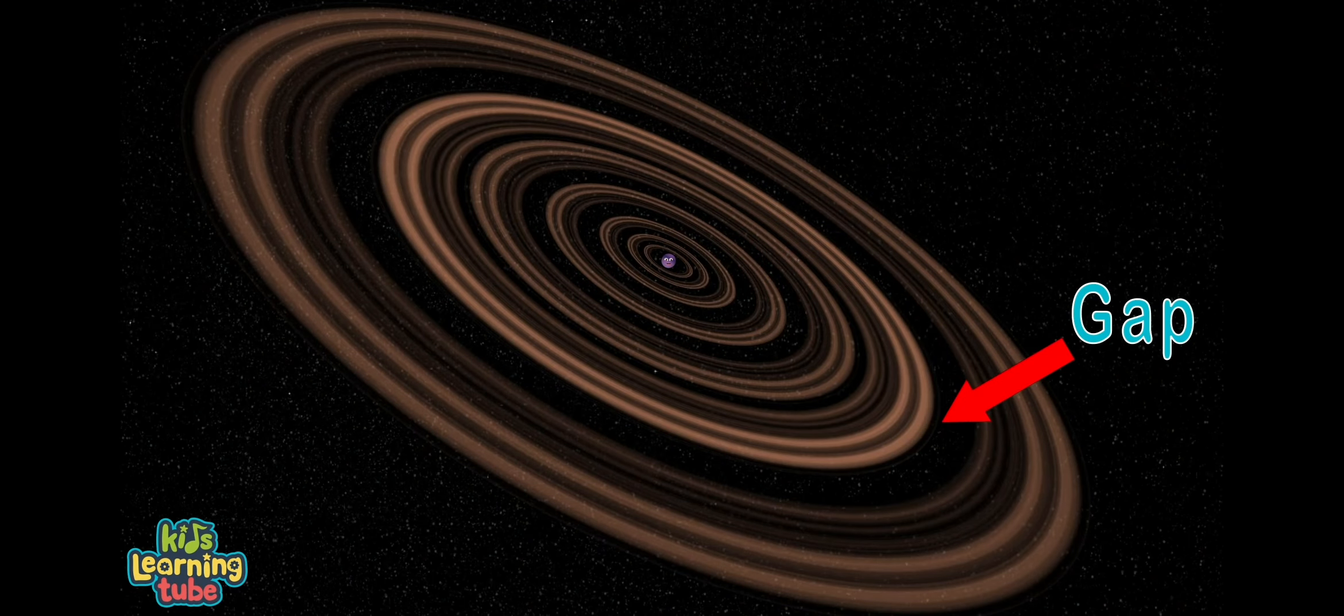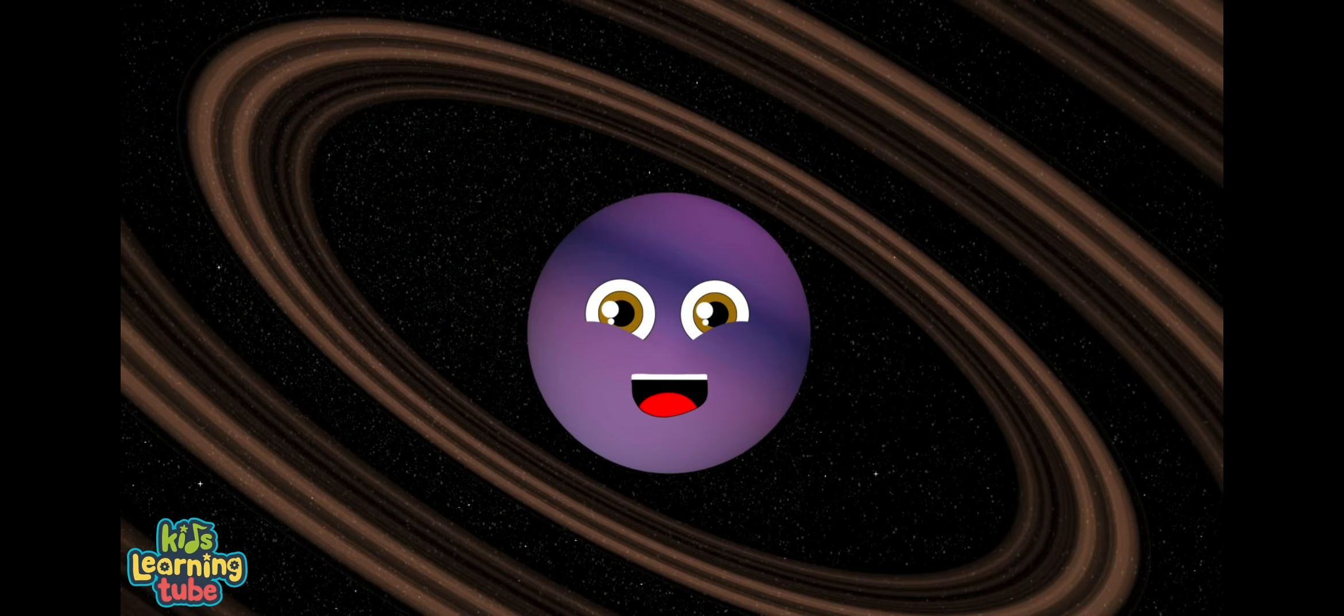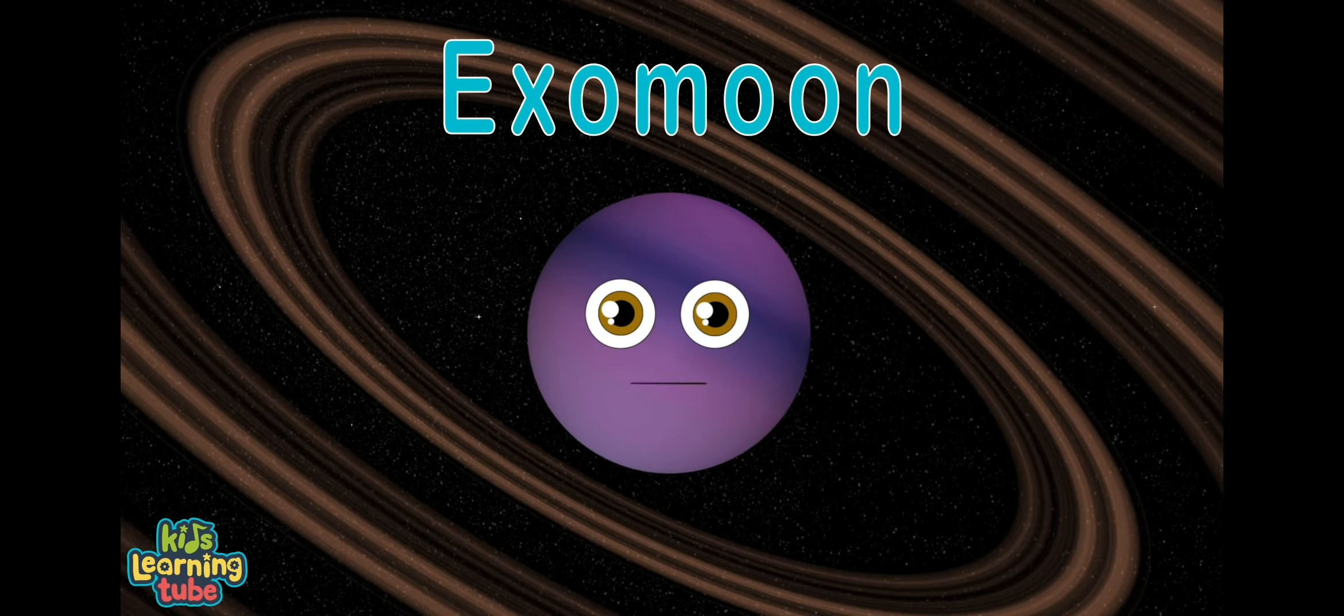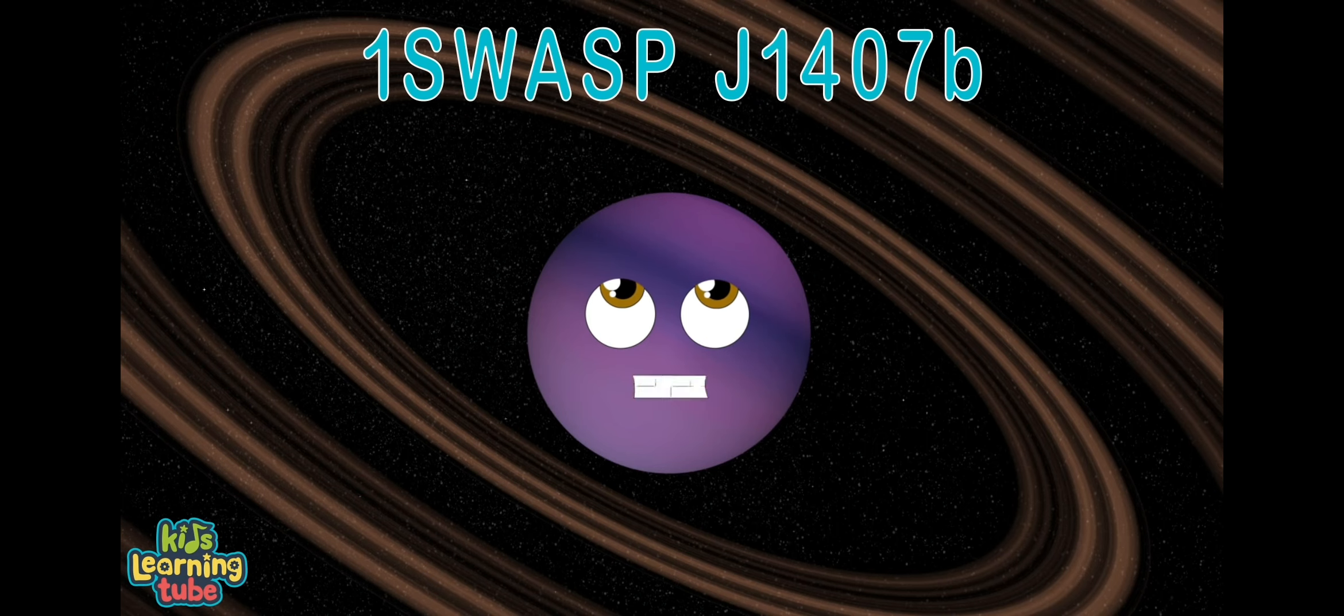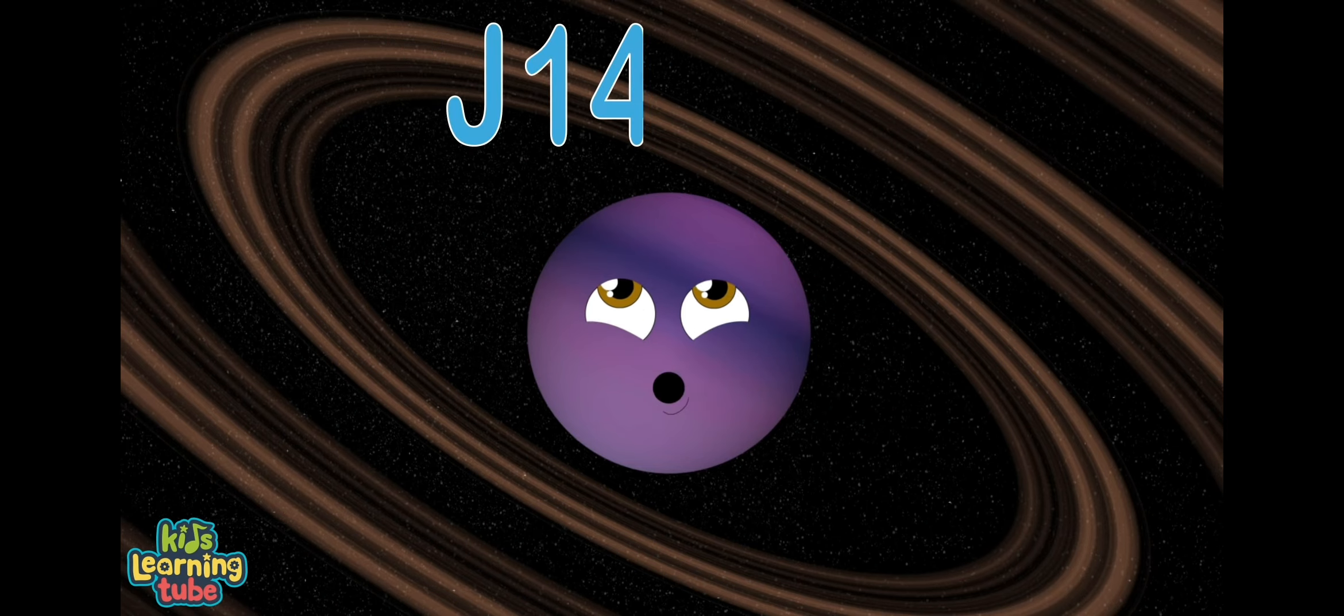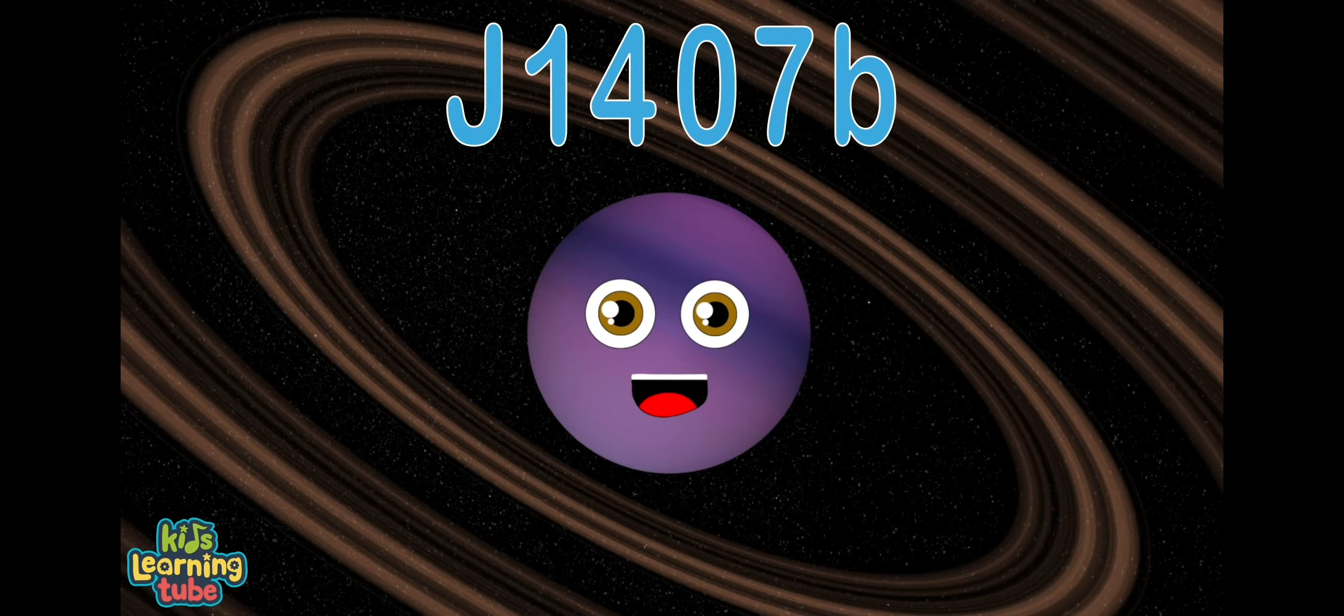There's a gap in my rings, which probably means one thing. It may have been made by an exomoon of mine. About this I do sing. I also have another name. When I show you, you will see. It is 1SWASP J1407B.